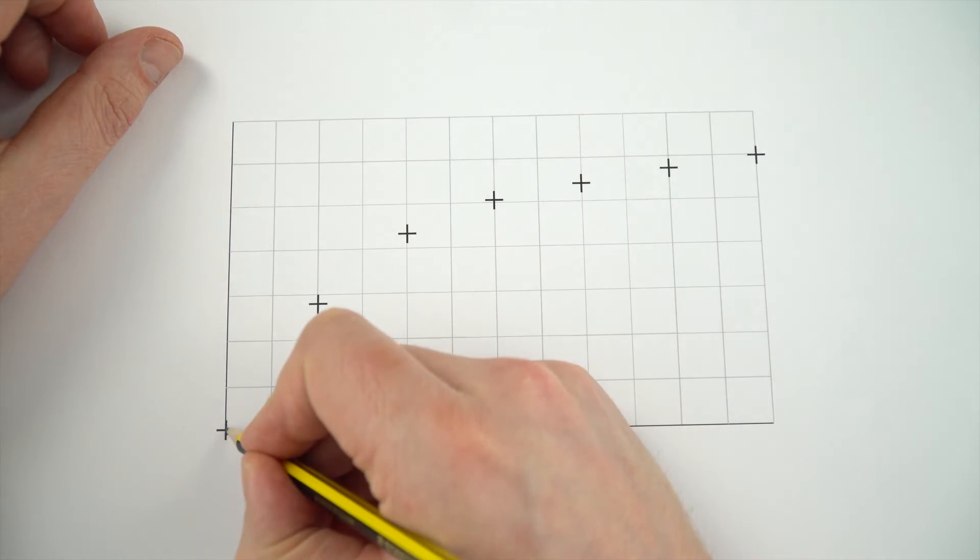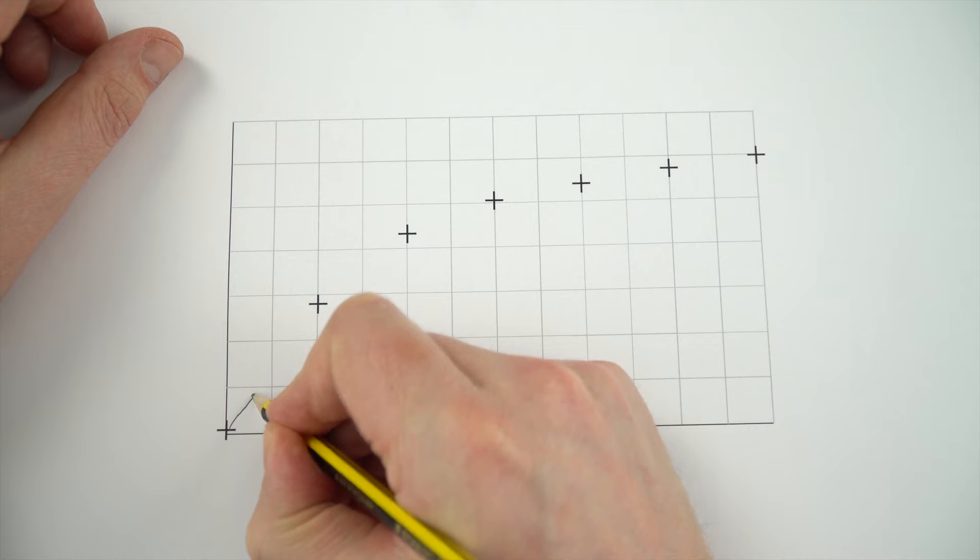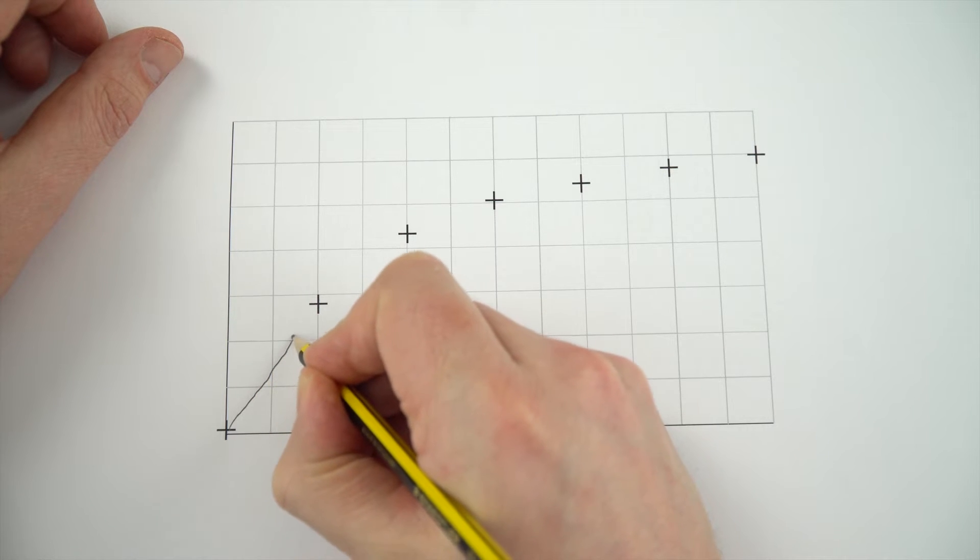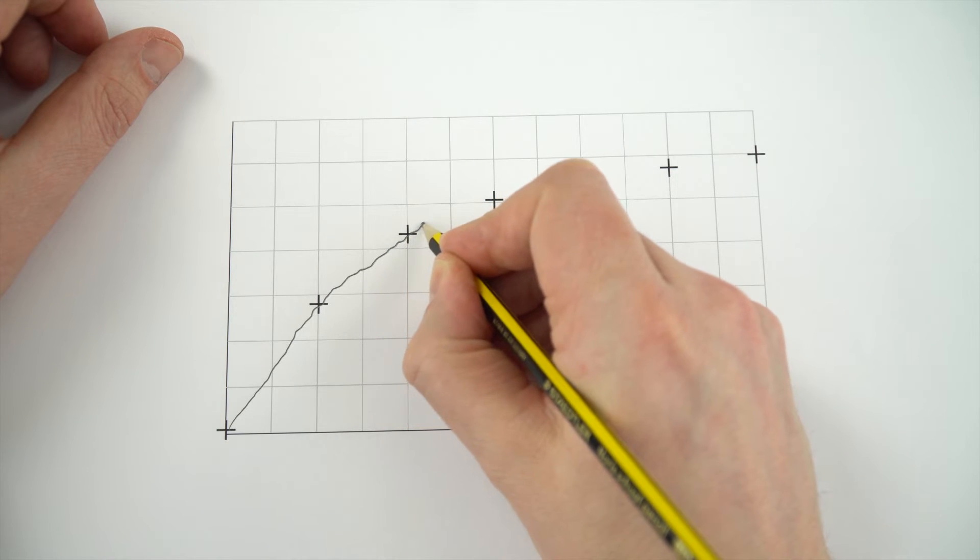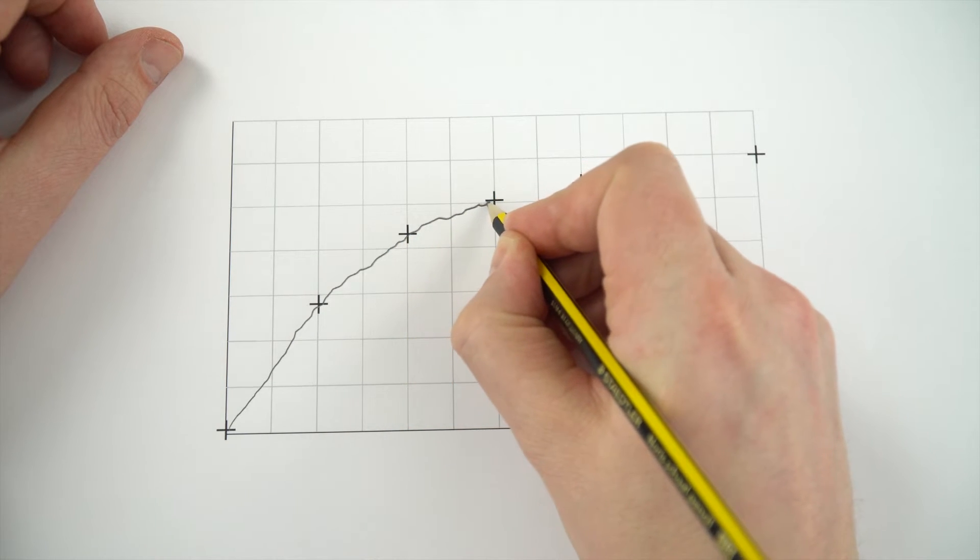Now these can be quite tricky to draw. What you shouldn't do is try and do it too slowly, because you then end up with a bit of a wiggly line. So a slow line, if you draw it, just looks rubbish.